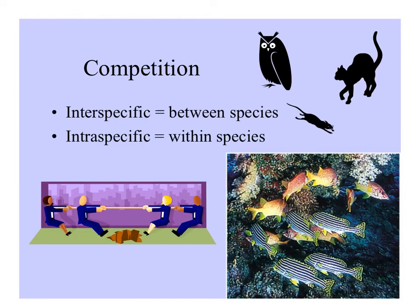When competition takes place between different species — for example, between predator owls and predator cats for their rodent prey — that's called interspecific competition. But when it's within a species, between individuals of the same species, it's called intraspecific competition, like these business people, or perhaps these fish.